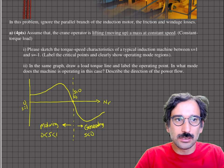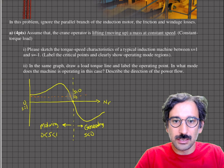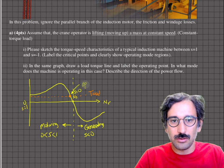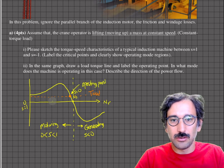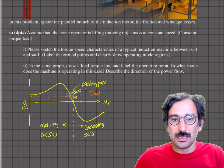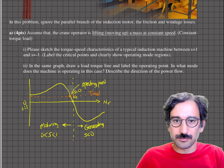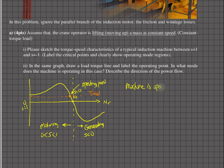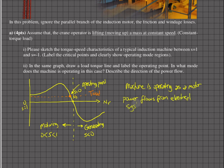If we draw the load torque line for the crane going up, the intersection point will be the operating point. We don't have numbers yet, but since the crane is going up it is motoring — converting electrical energy to mechanical energy — and running at slightly less than synchronous speed. The machine is operating as a motor, and power flows from the electrical system to the mechanical system.